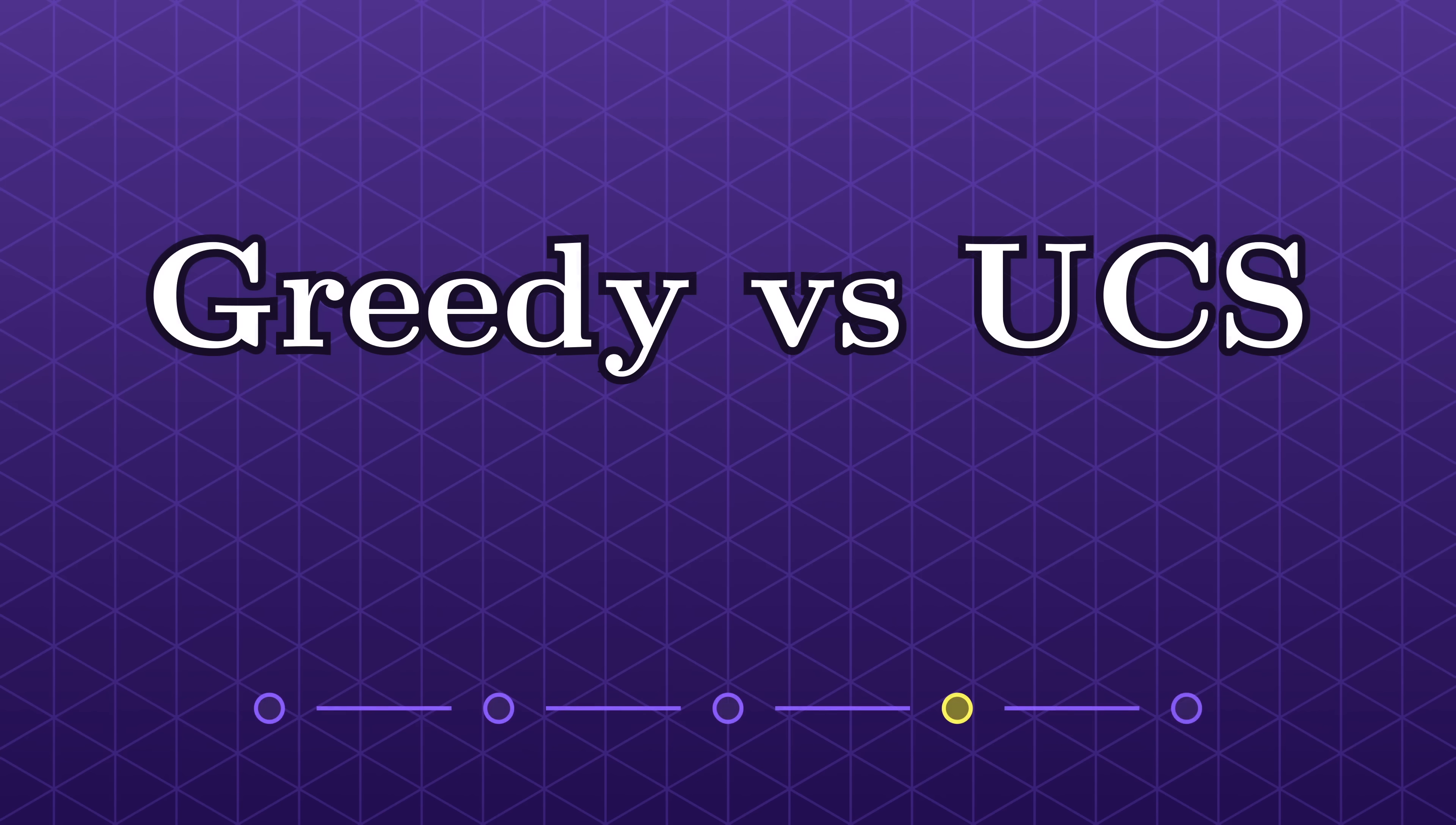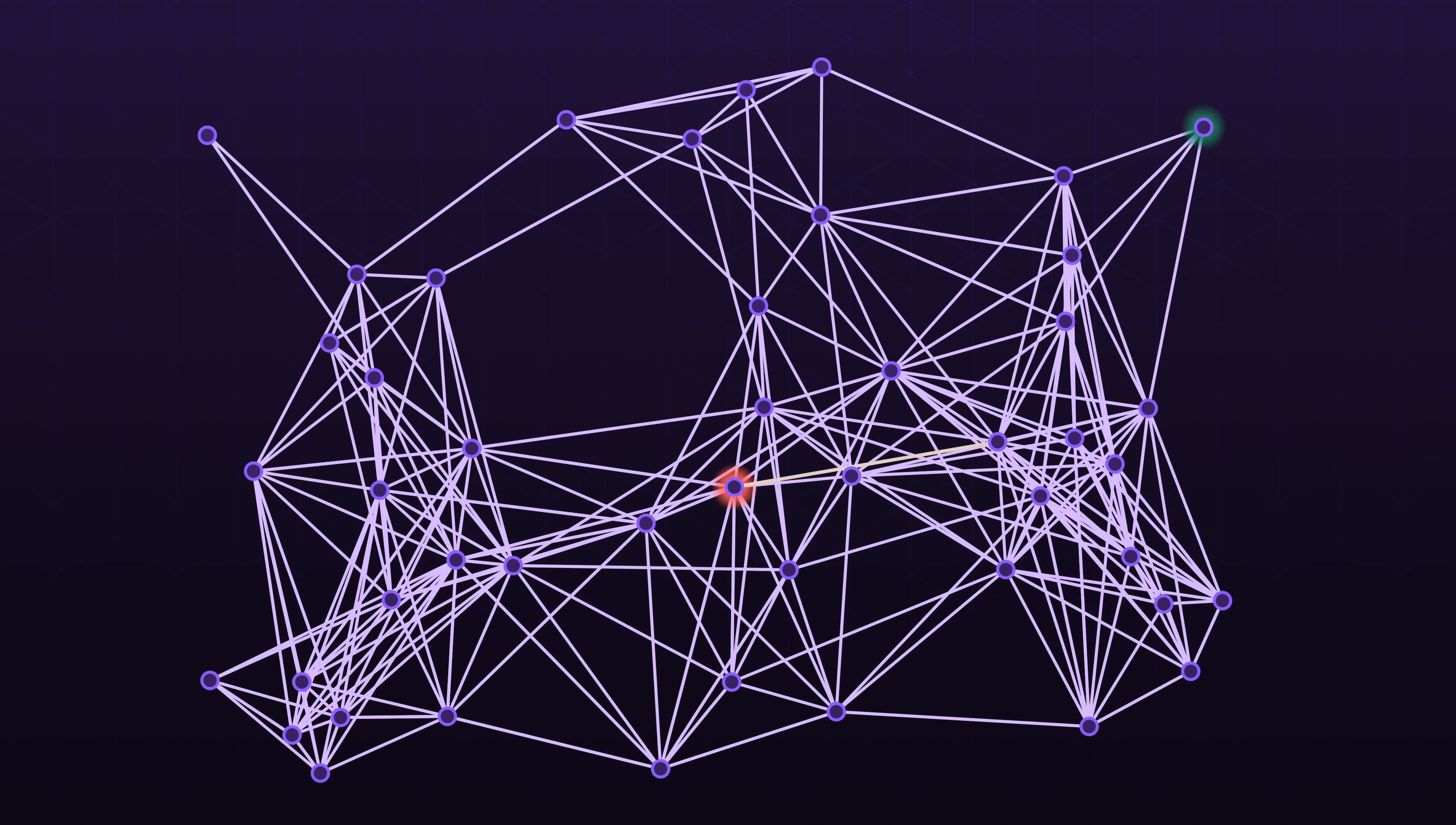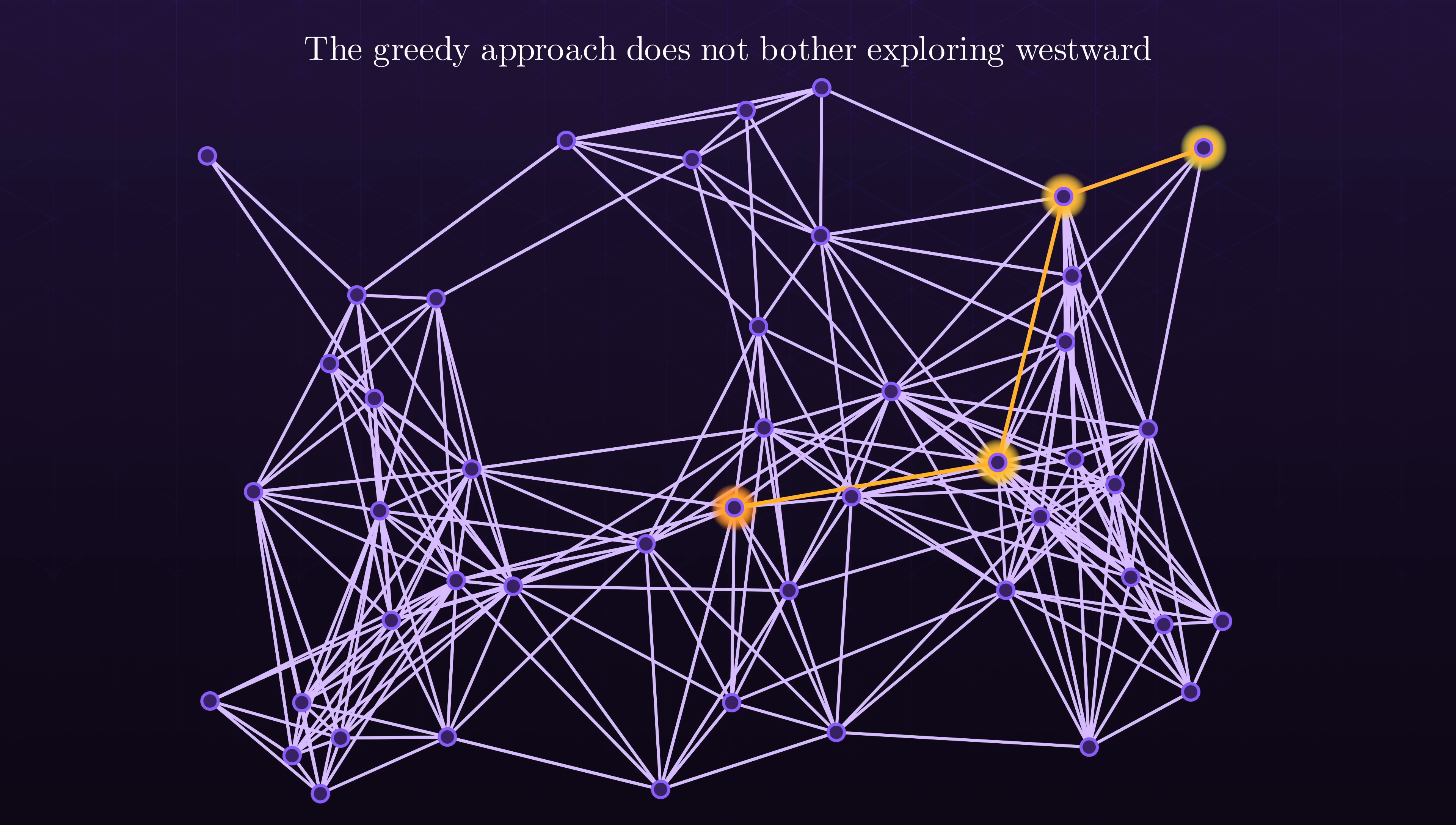In a sense, this goes back to our first intuitive greedy approach. Even though the greedy approach doesn't end up finding the optimal solution, it actually ends up exploring a very small set of nodes before finding a path. Fundamentally, the greedy approach just would never even bother going west in this graph.